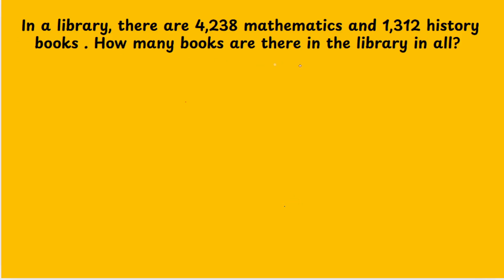This is the first example. The first step is to analyze the story. In a library, there are 4,238 mathematics books and 1,312 history books. So, what is the story about? Books. The story is about books. The second step: underline the numbers. The numbers given are 4,238 and 1,312.